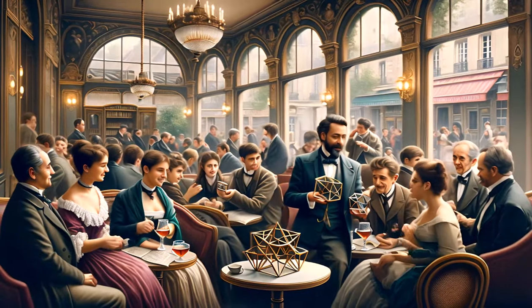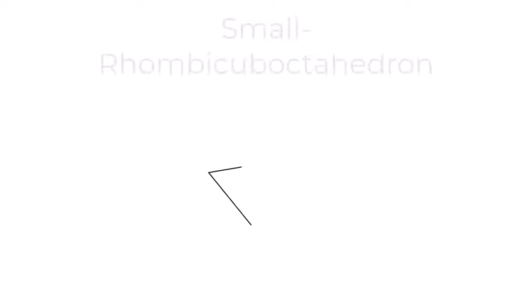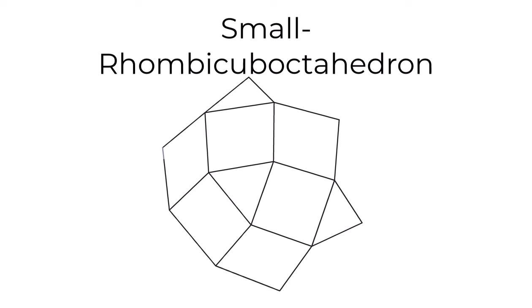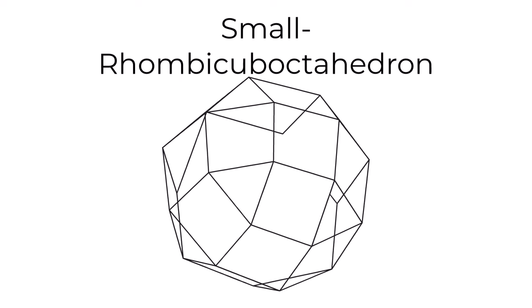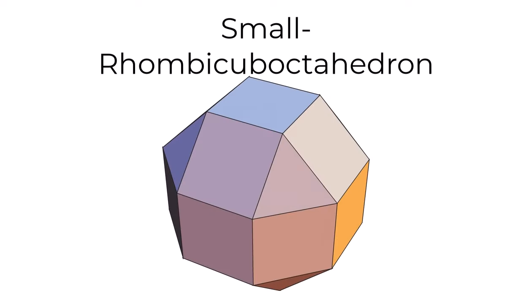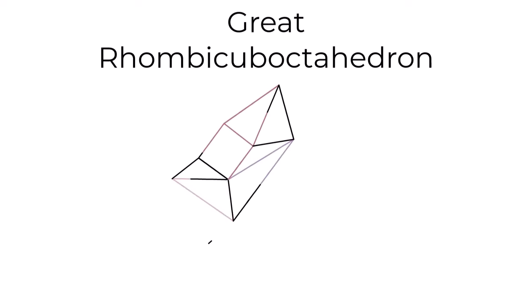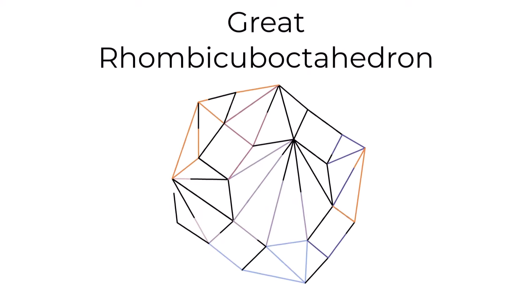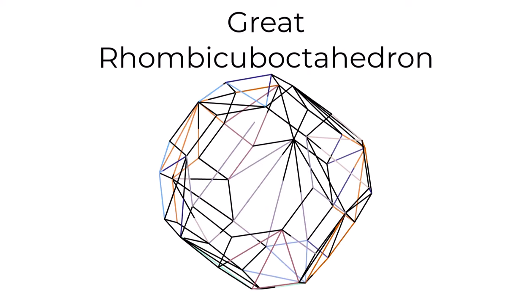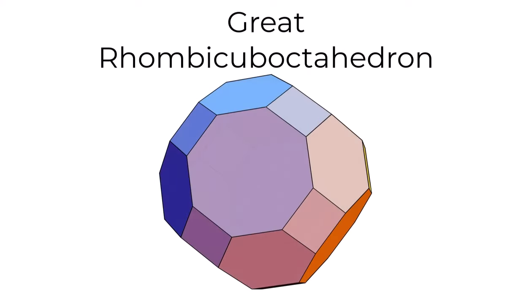Turning to Poinsot's contributions, the small rhombicuboctahedron showcases a sophisticated blend of cubic and octahedral features. Next, the great rhombicuboctahedron, with its intricate design of square, hexagonal, and octagonal faces, forms a complex interlocking pattern, advancing beyond the geometric restraints of its time.